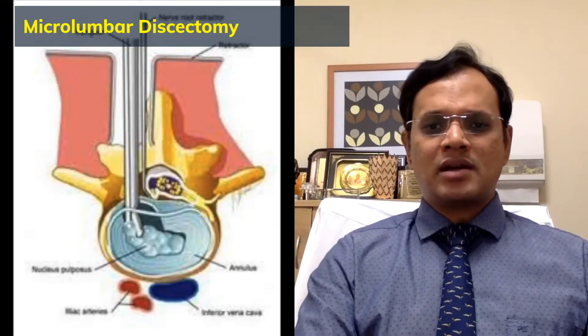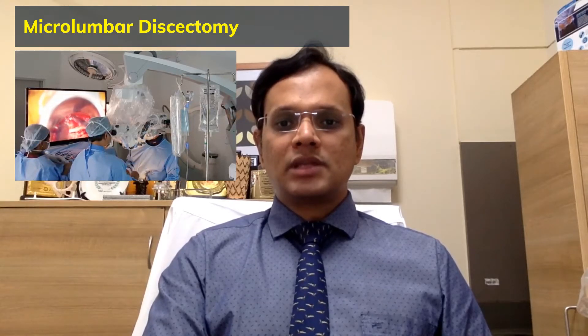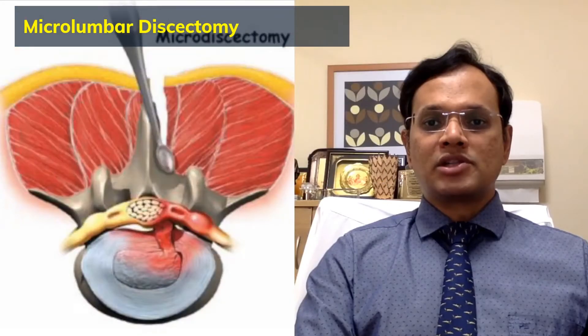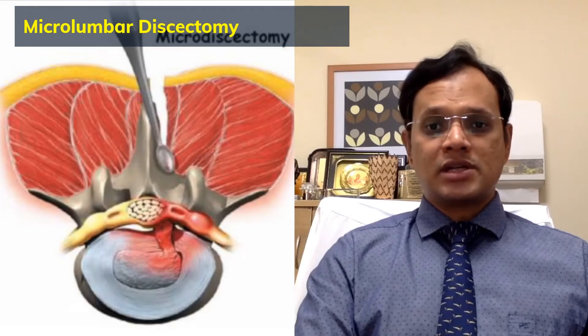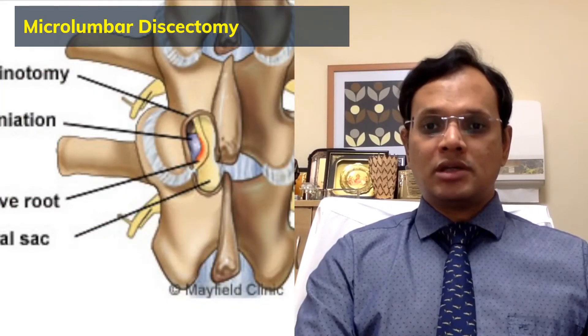With the advent of a surgical microscope, the procedure could be done as a micro lumbar discectomy, which has been pretty much the standard in the last decade or so. The incision size became smaller, the visibility and lighting became better, and outcomes significantly improved. However, this method still required the paraspinal muscles to be stripped from their attachments, and partial bone removal — called a laminotomy — was still required to create the access needed to reach the prolapsed disc fragment.